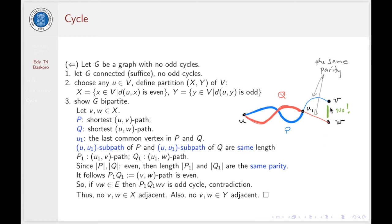Now, if we have an edge connecting V with W, then we will have a cycle here. This cycle would be of odd length, which is a contradiction. Thus, V and W cannot be adjacent. We prove that every two vertices in X are not adjacent. Similar proof can be done to show that any two vertices in Y are not adjacent. That means G must be bipartite. So we prove this theorem.